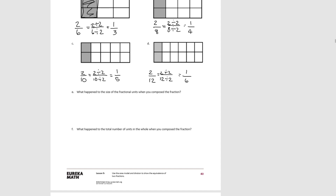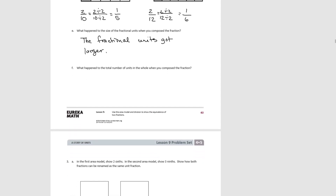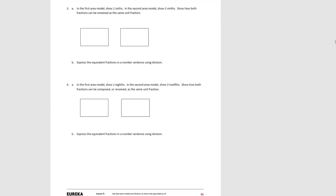Pause the video and answer E. What happened to the size of the fractional units when we composed the fractions? The fractional units got larger. And what happened to the total number of units in the whole when you composed the fractions? The total number of units decreased, which is the opposite of what happened when we decomposed the units with multiplication. Moving on to number three: in the first area model, show two sixths; in the second, show three ninths; and show how both fractions can be renamed as the same fractional unit. Pause the video and try that one.